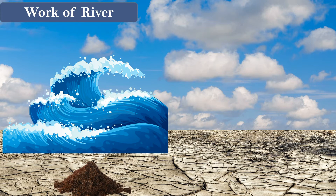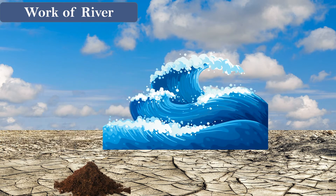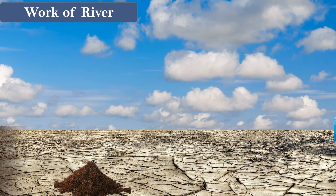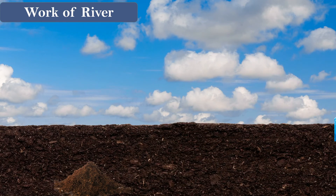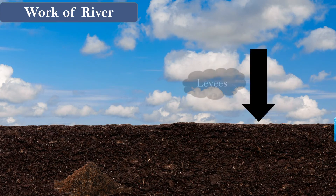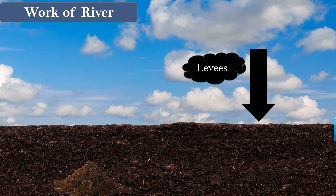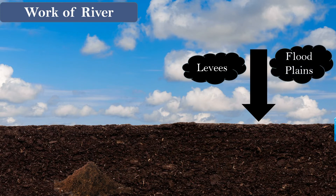Sometimes when the river overflows, it deposits its eroded material on its banks, creating slightly elevated banks called levees. Also, sometimes it forms a brand new plain called floodplains. These floodplains have very fertile soil and are great for cultivation.